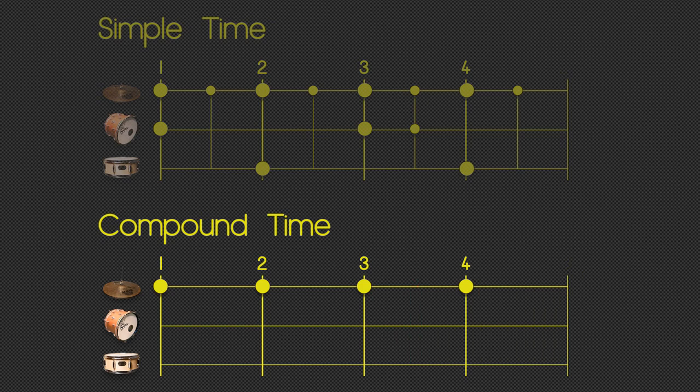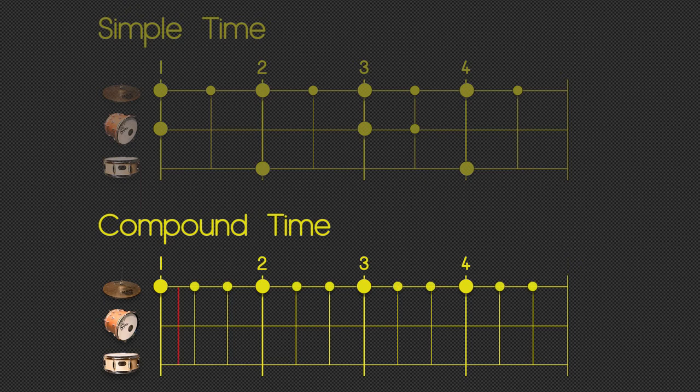But this time we're going to divide each beat by 3, ending up with 12 inner beats in the bar. Let's put a hi-hat on each of those: 1 and a 2 and a 3 and a 4 and a. This is compound time because everything is a division of 3.